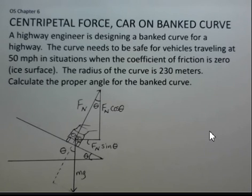A highway engineer is designing this curve such that a car can go around on an icy surface with no friction at 50 miles an hour and navigate the curve. Not recommended, but hypothetically, going around this icy curve at 50 miles an hour. The radius of the curve is 230 meters.